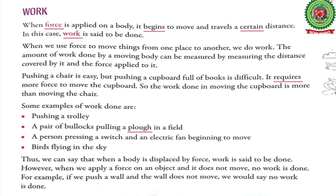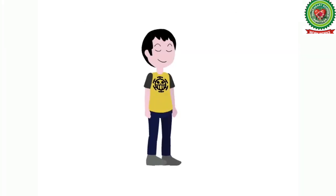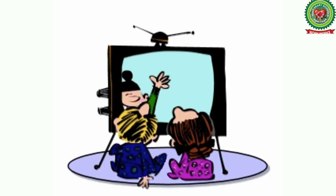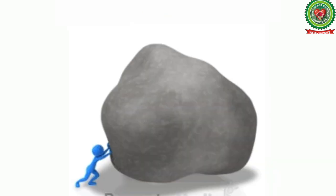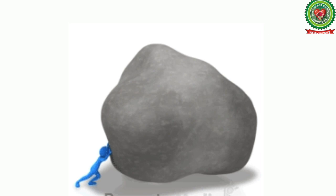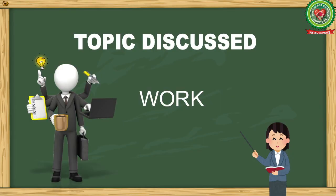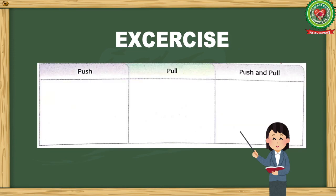Similarly, if we are standing idle at one place, no work is said to be done. Some more examples of work not done are: sitting and watching a TV show, and pushing a heavy rock that does not move. So today we have discussed about work in detail — read and revise this topic again.